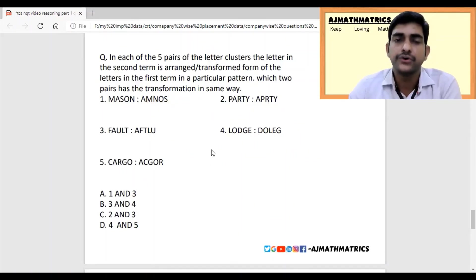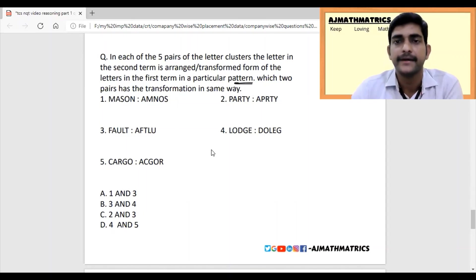In each of five pairs of letter clusters, the letters in the second term are arranged and transformed from the first term in a particular pattern. We need to find which two pairs have transformation in the same way. AMNOS becomes MASON - M comes to second place, A comes to first place, and S, O, N follow a pattern. We need to find two options that follow the same pattern. PARTY: P comes to second place, A comes to first place, but R is not moving anywhere, so R is in the same place. These two don't belong to a pair.